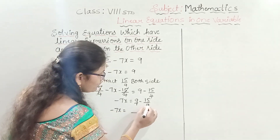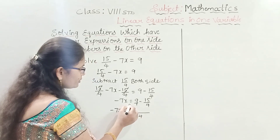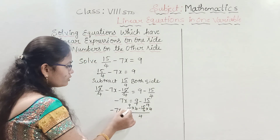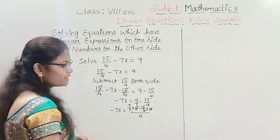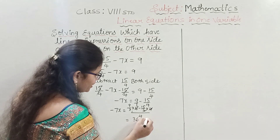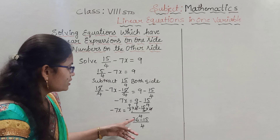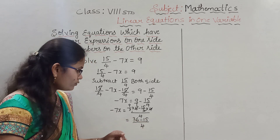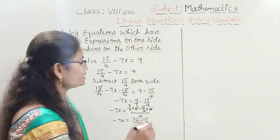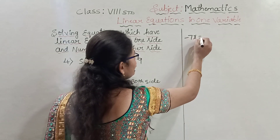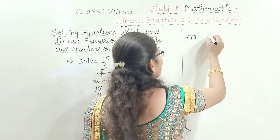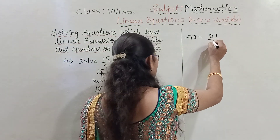Expressing 9 with denominator 4: 9 times 4 by 4 gives 36 by 4. So minus 7x equals 36 by 4 minus 15 by 4. Subtracting the numerators: 36 minus 15 equals 21. Therefore minus 7x equals 21 by 4.